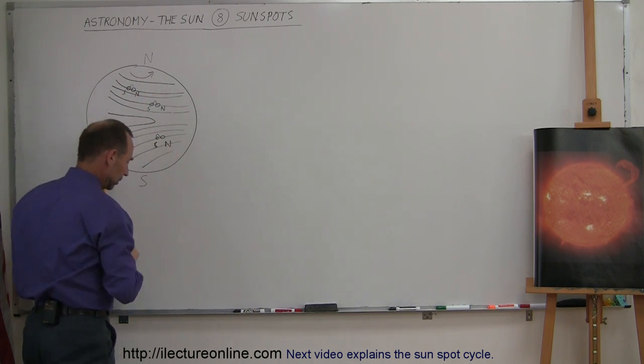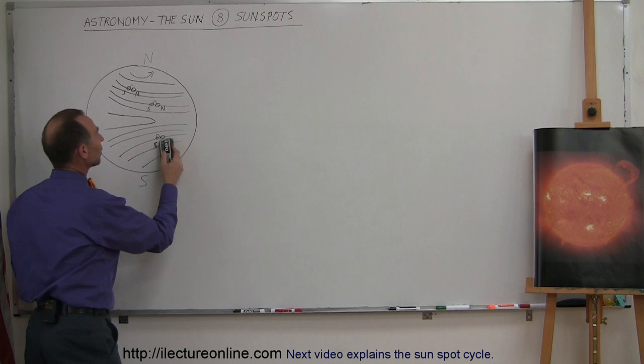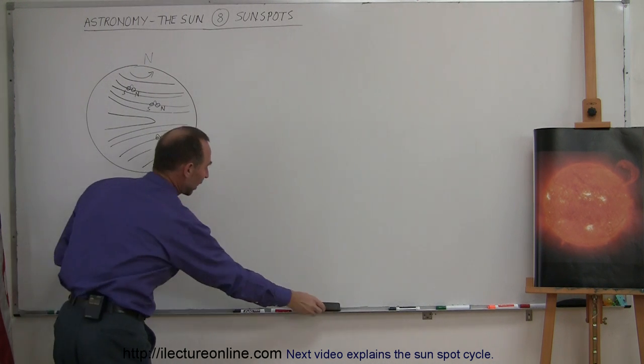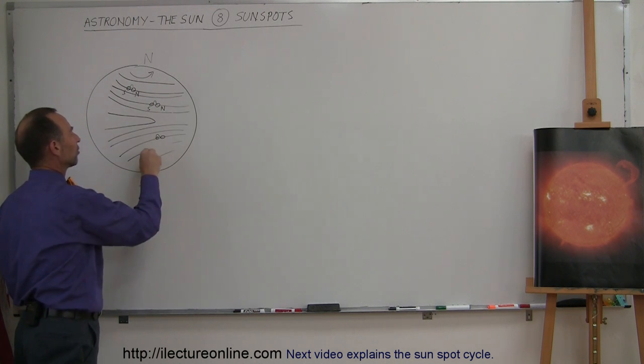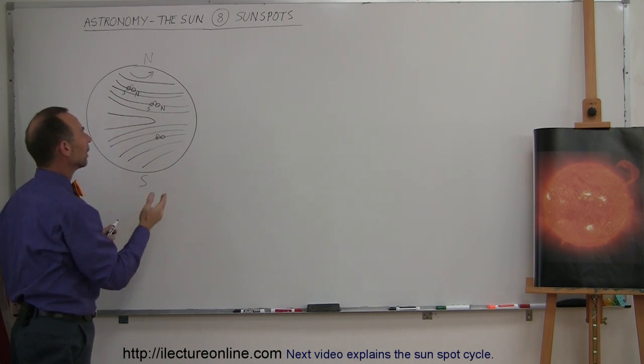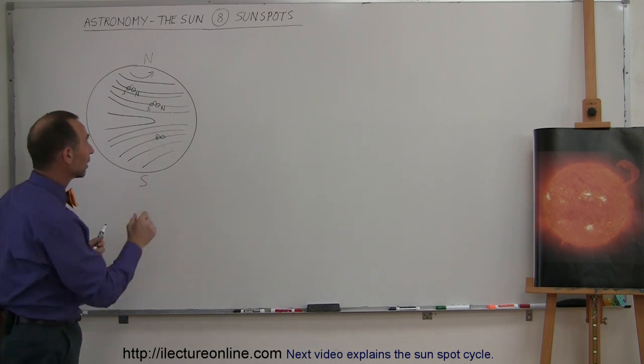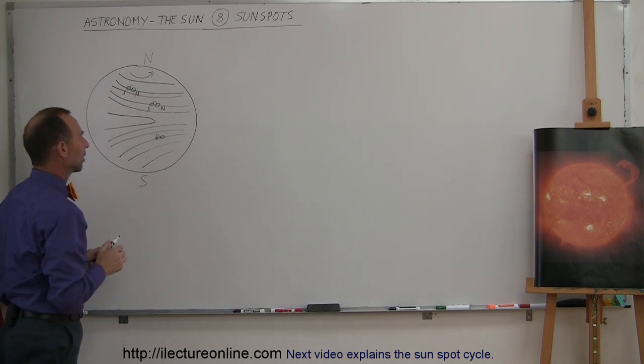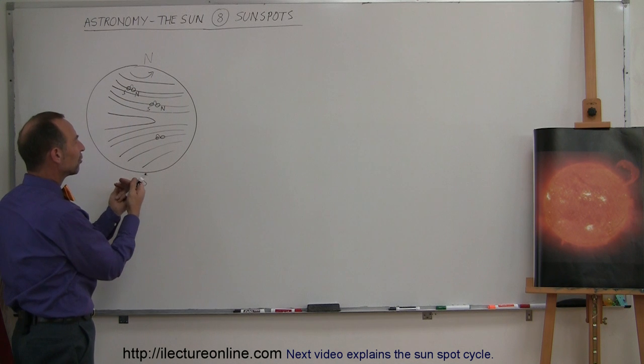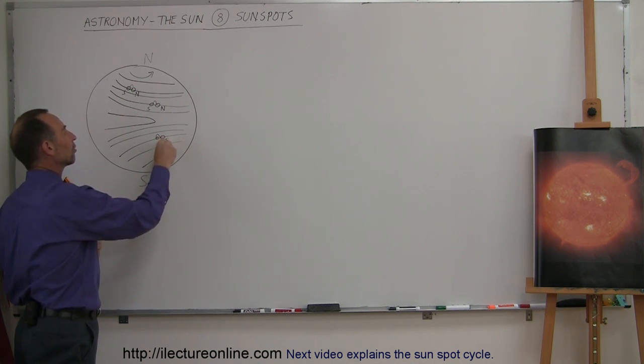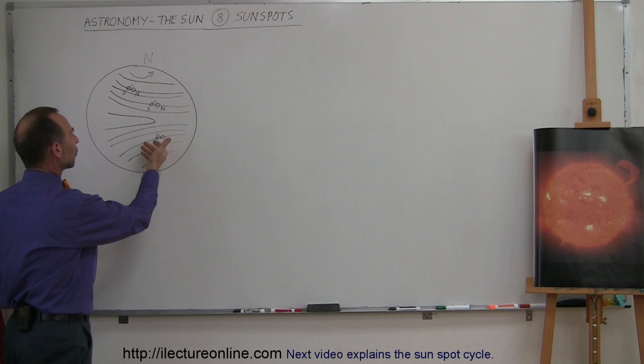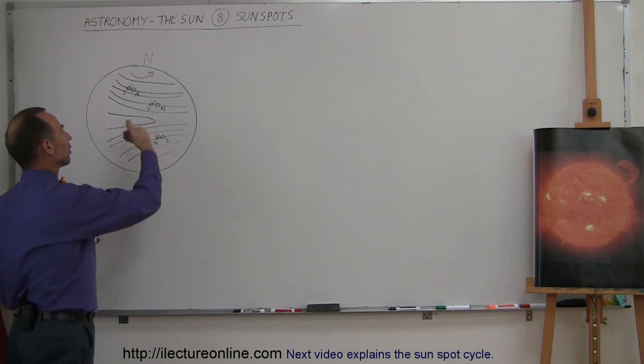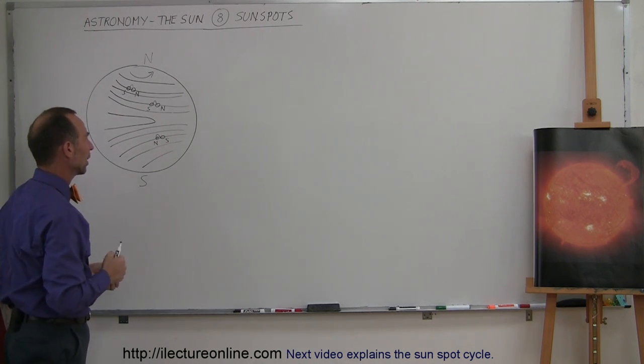Every magnet has a North Pole and a South Pole, and that is exemplified by the sunspot where one of the leading sunspot will be one pole and the trailing sunspot will be the other pole. Typically sunspots occur in pairs like that. But on the Southern Hemisphere, the orientation is different. The leading sunspot will be South and the trailing sunspot will be North, reversed compared to the Northern Hemisphere.